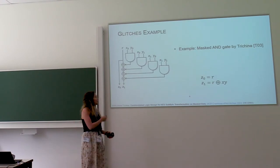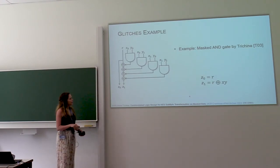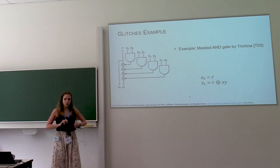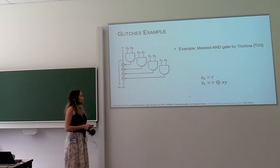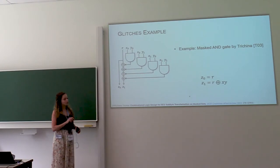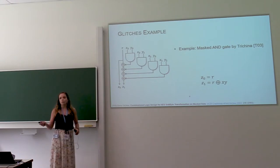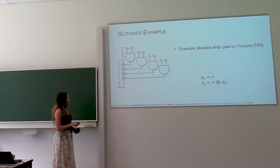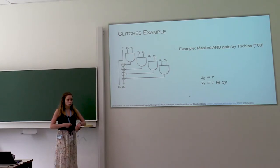So let's look at an example. This is a masked AND gate that was introduced in 2003, so pretty early days for side-channel countermeasures. And so we split up the input variables in two shares. So that means that if you want to do a multiplication, there are four cross products. And the way this masked AND gate works is it assigns one output share just to a random value.